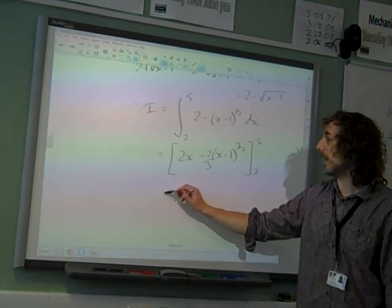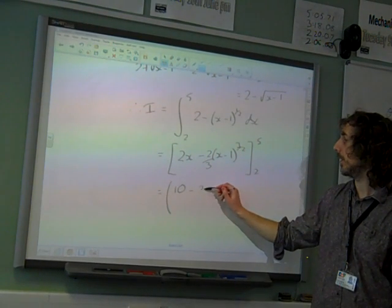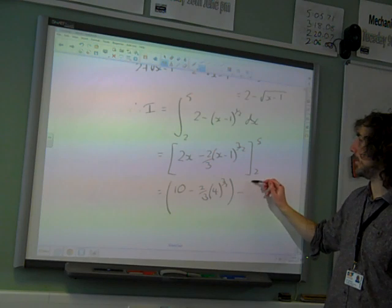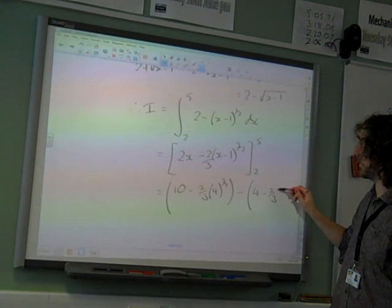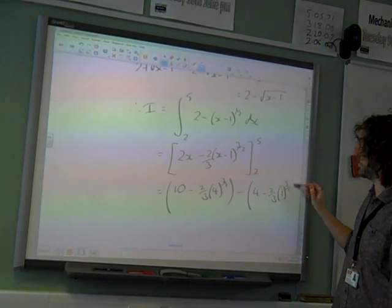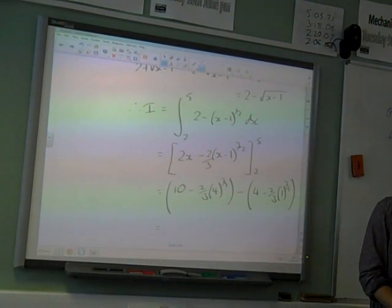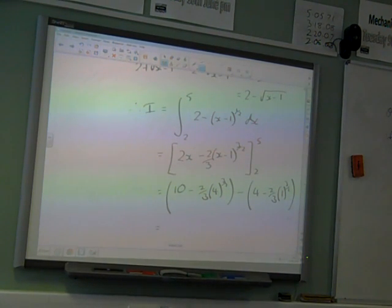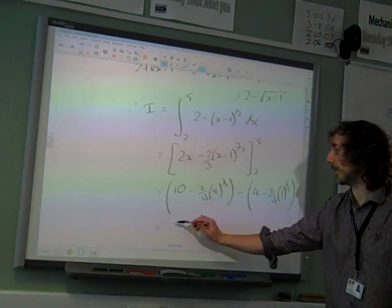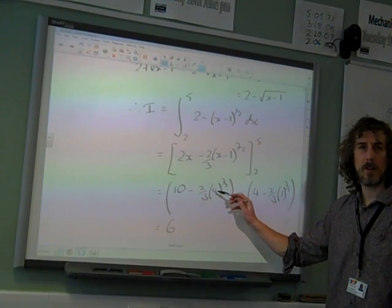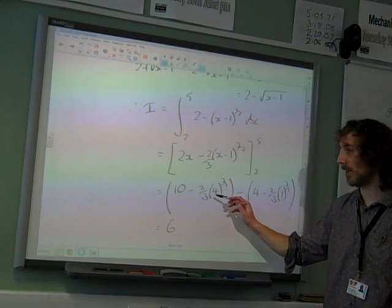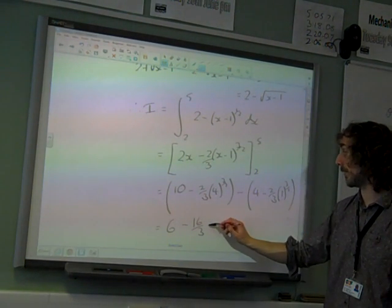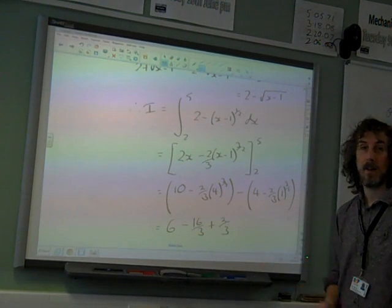So we're going to sub in the limits and get 10 minus 2 thirds of 4 to the 3 over 2 minus 4 minus 2 thirds of 1 to 3 over 2. So which you could probably just stick in your calculator if you really wanted to. What have we got? We've got 10 divided by 4, so we've got 6 there. And 4 to 3 over 2, that's 4 square root of 2 cubed is 8. So that is minus 16 over 3. And here we've also got, as we expected, the plus 2 over 3.